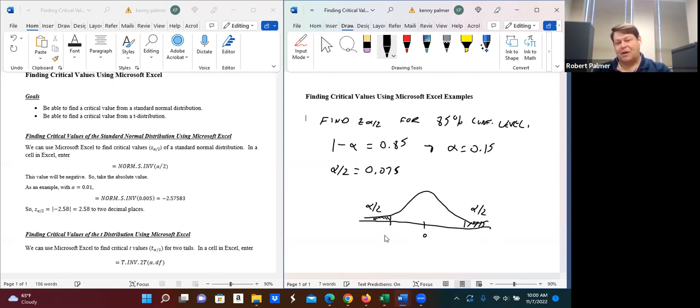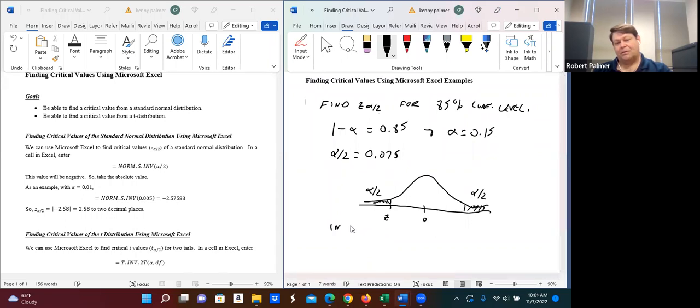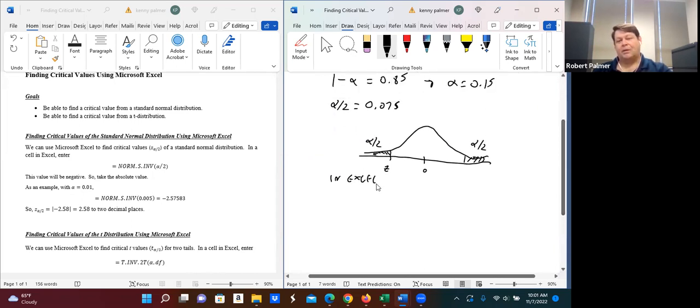So what we're finding is actually this z value right here, which is going to be negative. That's what this does. So what we're going to do is we're going to plug in, so in Excel, we're going to plug in NORM.S.INV of 0.075. Let's find out what that is.